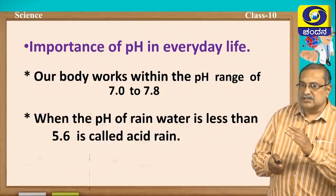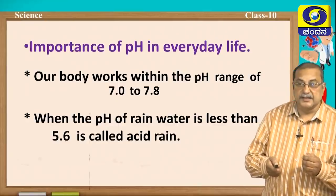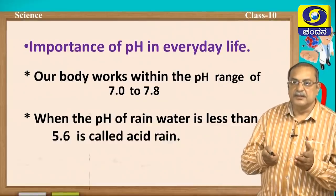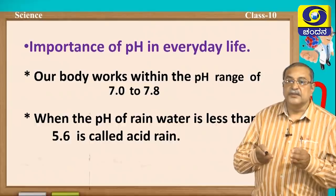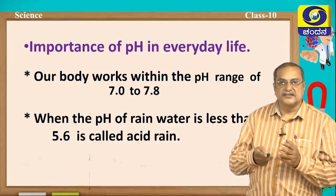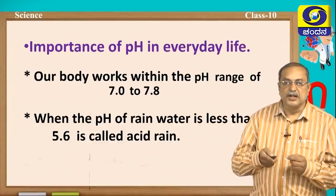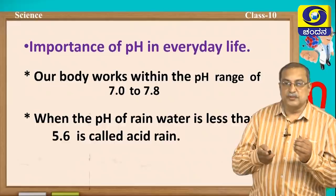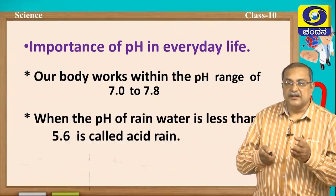Our body works within the pH range of 7 to 7.8. When the pH of rainwater is less than 5.6, it is called acid rain. Rainwater while falling dissolves substances such as carbon dioxide and sulfur dioxide to form their respective acids and falls to the earth. When the pH value of rainwater checks below 7, and if it is going to be 5.6, then it is said to be acidic, and that rain is called acid rain.